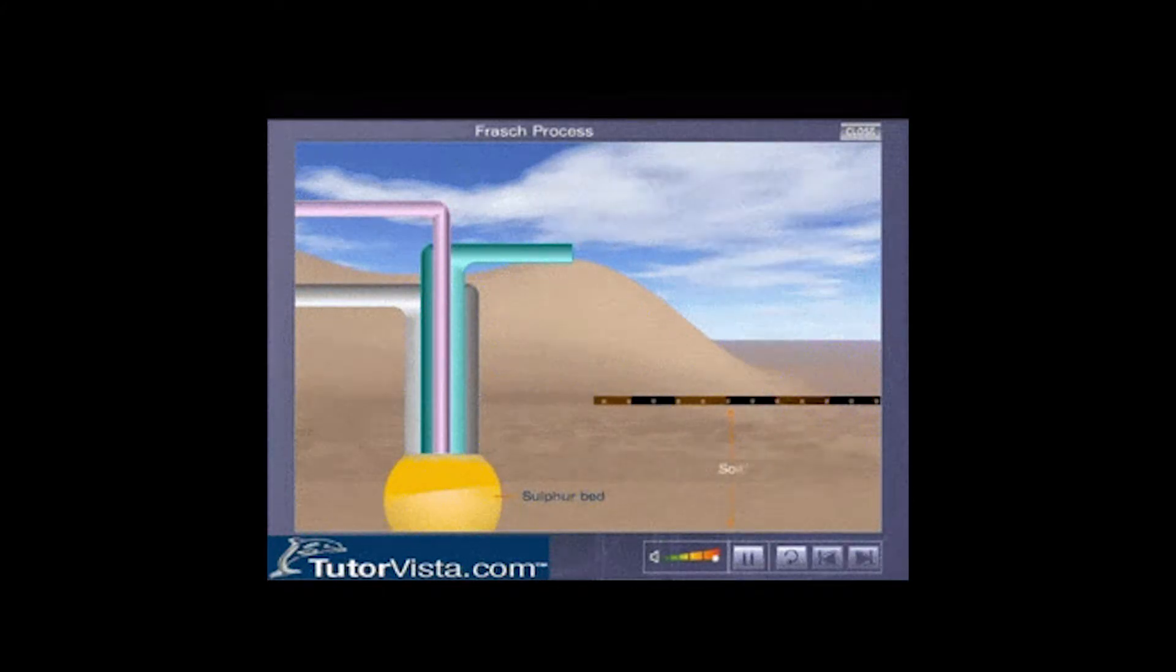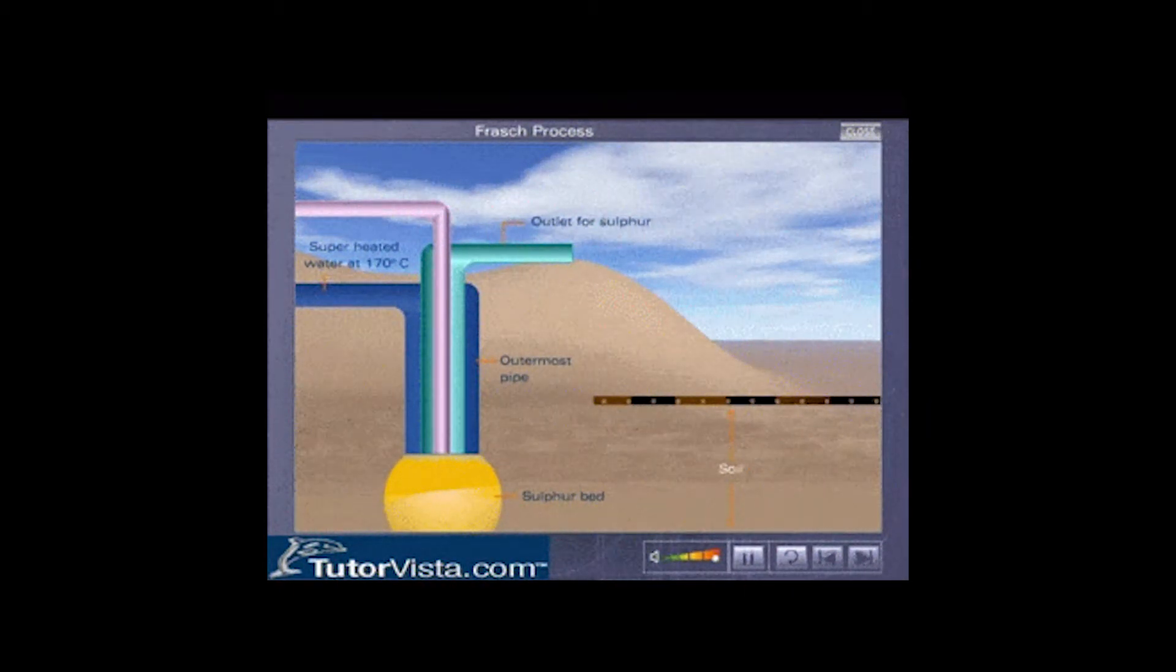three tubes are introduced into an underground sulfur deposit. Superheated water and hot air are injected through two of the tubes, forcing the sulfur deposit to froth and eventually rise up to the third tube where it is collected.